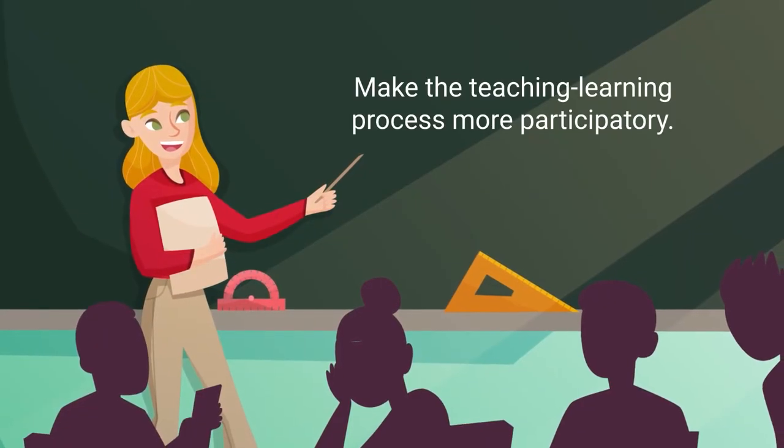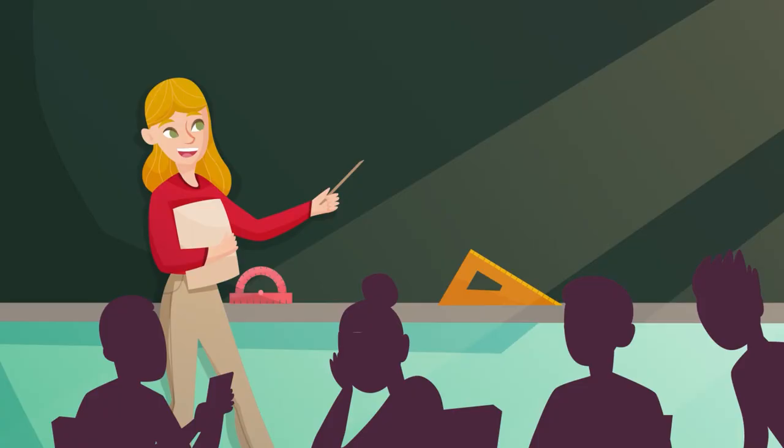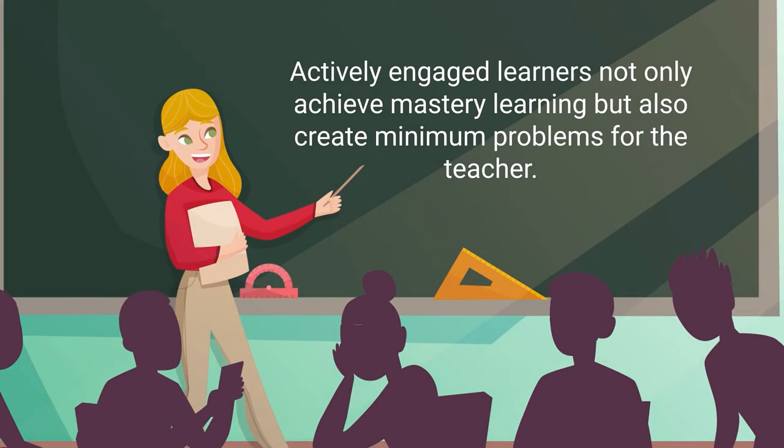The next is the principle of involvement. In a classroom, as a good classroom manager, a teacher makes the teaching learning process more participatory — meaning the involvement of learners in each and every step of teaching learning. Active involvement of learners in instructional tasks is a precondition for learning; if they are not actively engaged, they will not learn. Actively engaged learners not only achieve mastery learning, but also create minimum problems for the teachers. More involvement means less disturbance and less problems for the teacher.